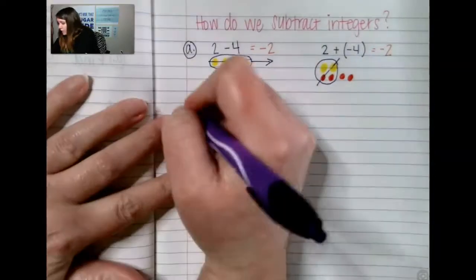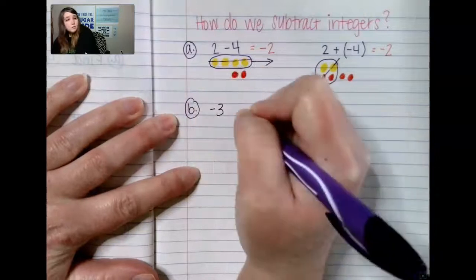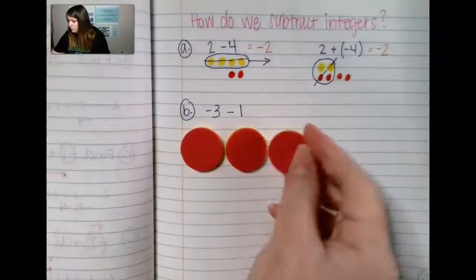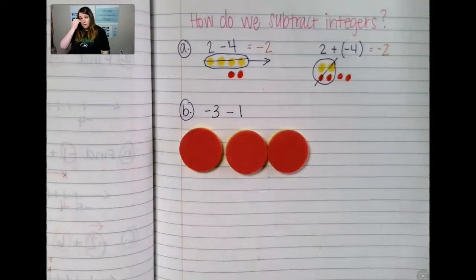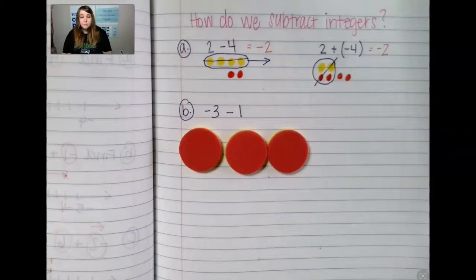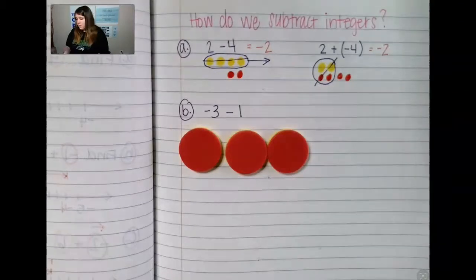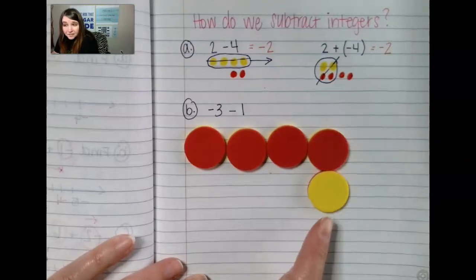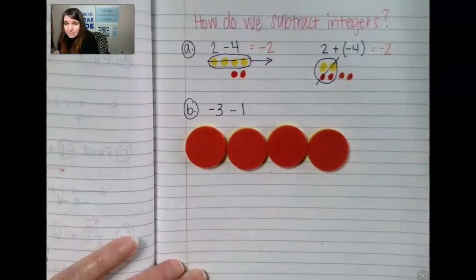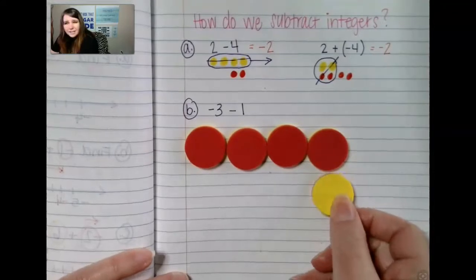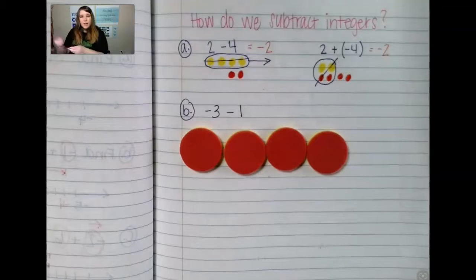Let's try another one: negative 3 minus 1. So I have negative 3 and I need to take away a positive 1. Well, I cannot take away a positive 1, so I need to create the possibility for this to even occur. Therefore, I'm going to add on a 0 pair so that I have 1 positive that I can take away. I'm removing my 1 positive and it leaves me with negative 4.